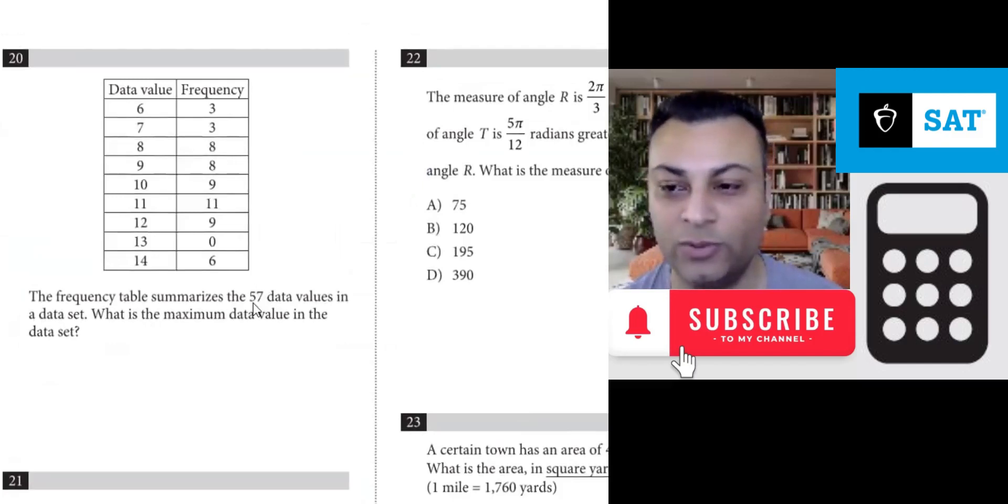Question 20. The frequency table summarizes the 57 data values in a data set. What is the maximum data value in the data set?